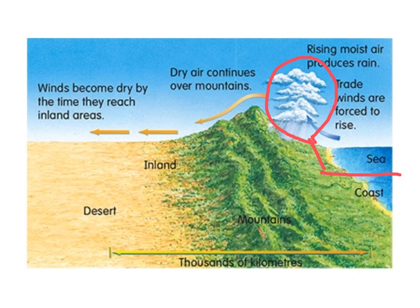The mountains are so high that clouds form, become too heavy, and precipitate all on the eastern side of the mountain. Any rain, hail or snow enters the waterways on this same side of the mountain, and heads straight back out to sea or into underground water sources.